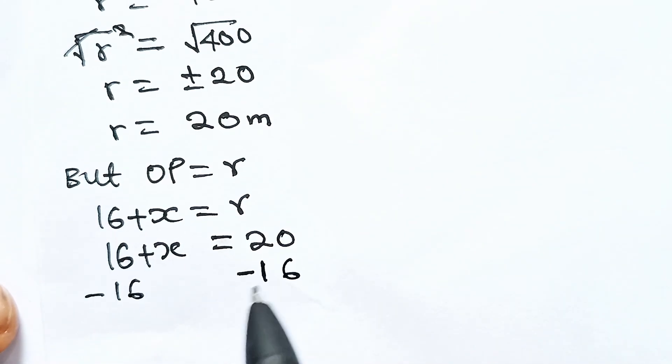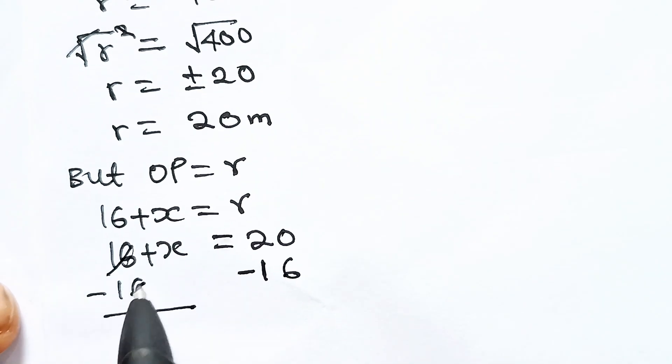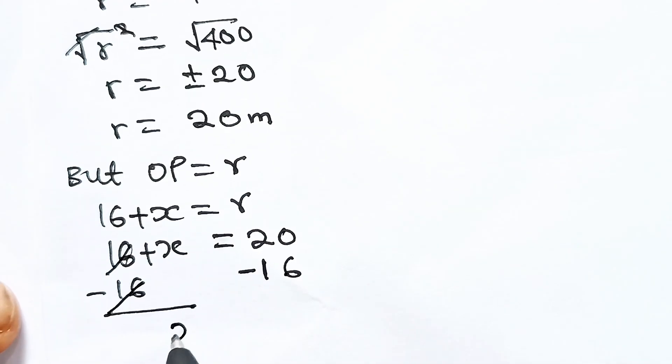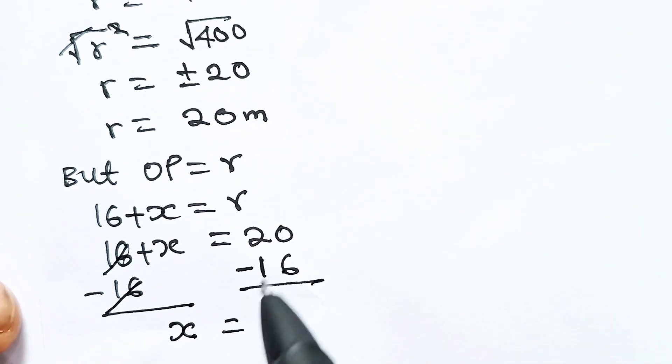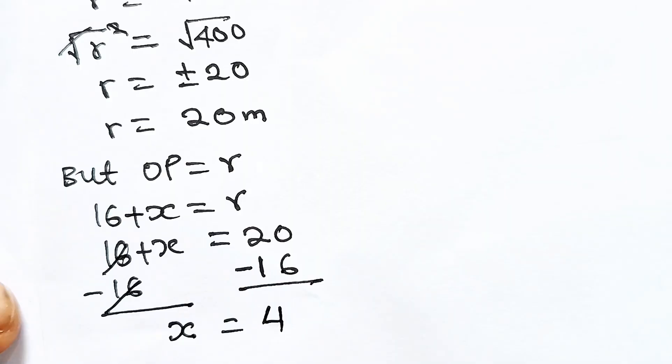Subtracting 16 from both sides, x = 20 - 16 = 4. So we have gotten the value of x.